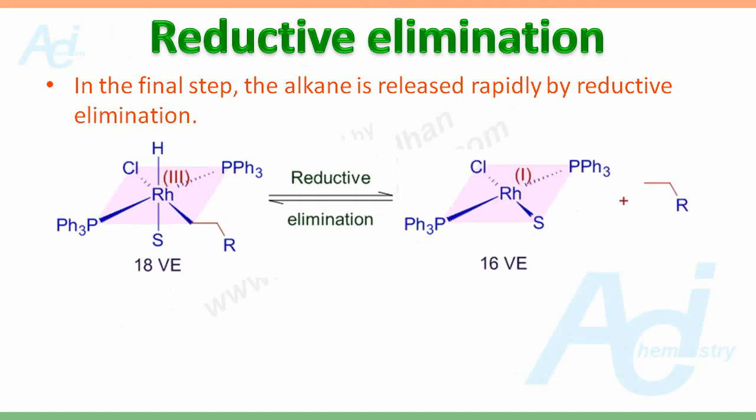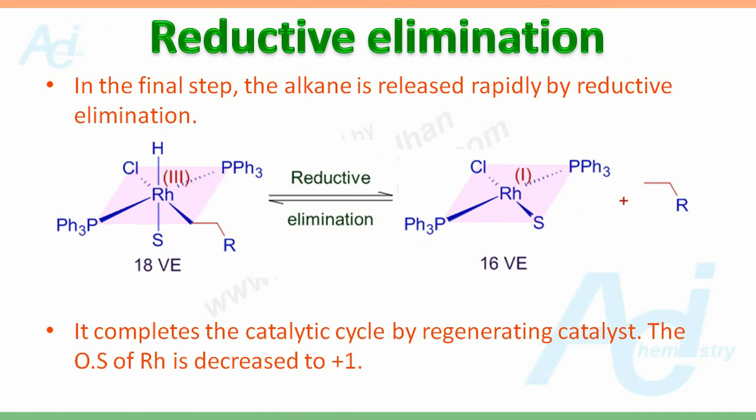In the final step, the olefin molecule is released rapidly by reductive elimination, completing the catalytic cycle by regenerating the catalyst. The oxidation state of rhodium is decreased to +1, hence reductive elimination. The octahedral 18 valence electron complex is converted to a square planar 16 valence electron complex. This is the actual catalyst generated again and used in another cycle.